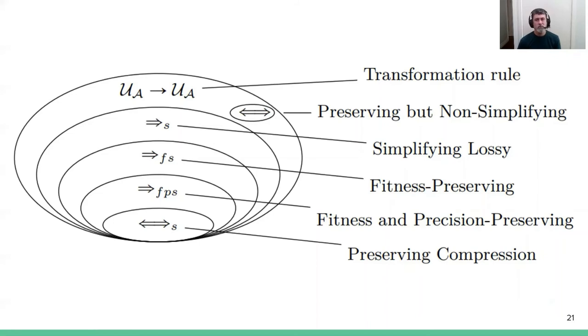The established quality dimensions for process mining were quite useful to us in this classification. These are things like fitness and precision and so on. We have a hierarchy of rules where some rules preserve all the information in the original model. Some of them lose stochastic information but preserve control flow fitness and precision. Then some are only able to preserve fitness. Then you have some lossy but simplifying rules within this scheme.